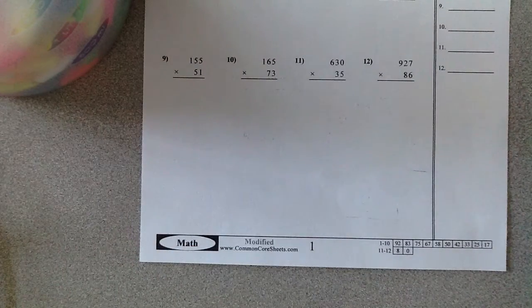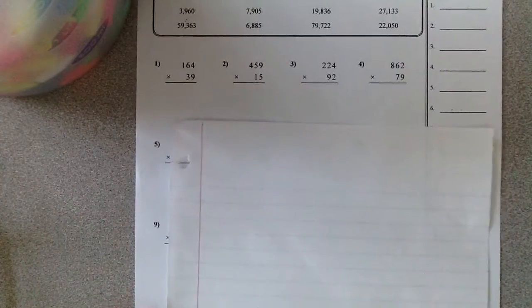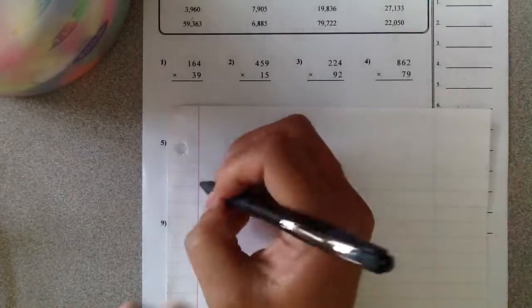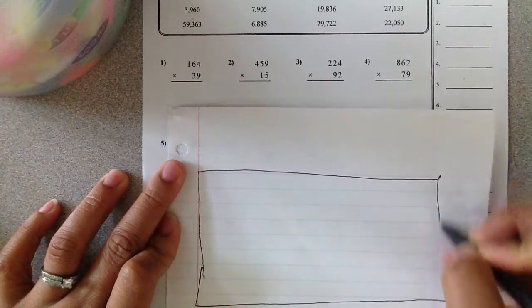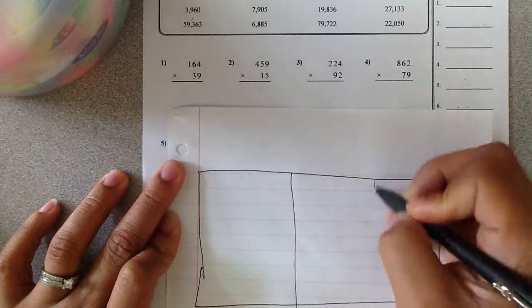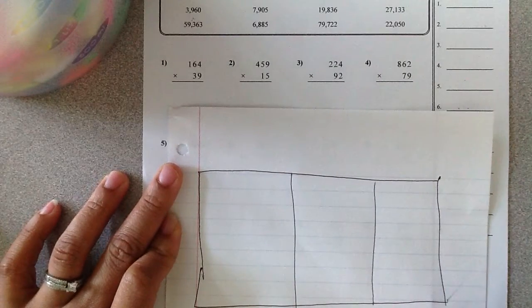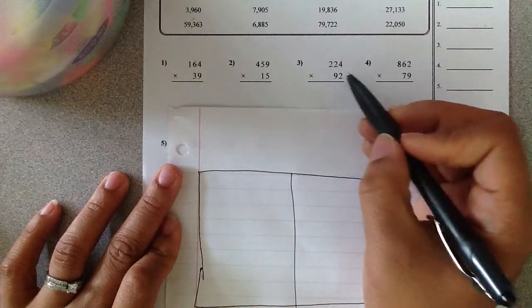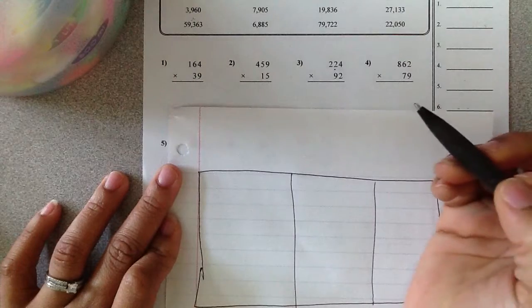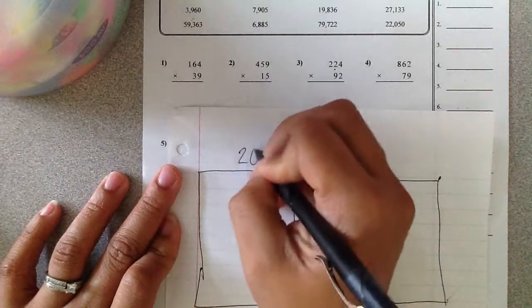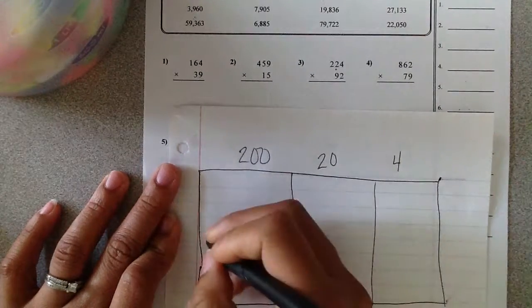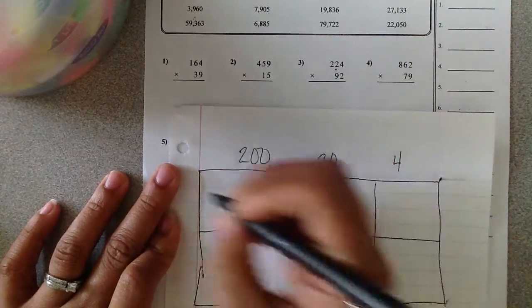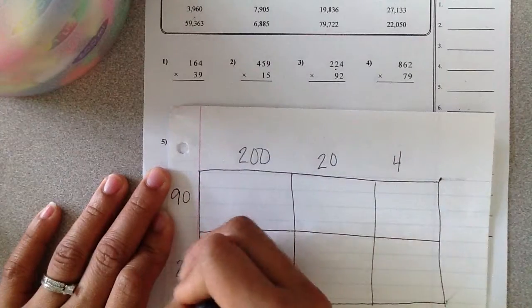I'm going to look at number three. Number three was two hundred twenty-four times ninety-two. Draw my box out. Three sections because I have a number with three digits, or my largest number has three place values. So two hundred twenty-four. Break it down place value by place value. On the side is ninety-two.